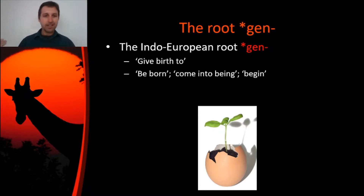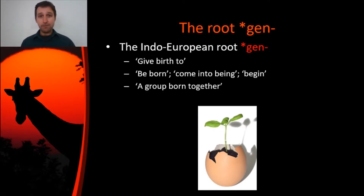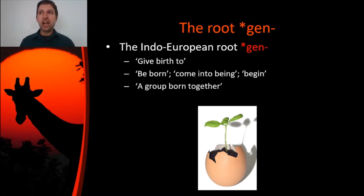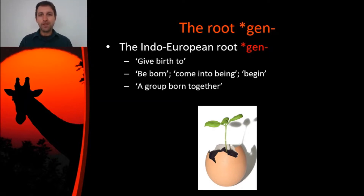On the other hand, sort of the opposite of that is being born. Somebody gives birth, and then somebody else is born, or comes into being, or begins life. So this root gives birth — no pun intended — to words that mean all of these different things. It also gives birth to nouns that mean a group that is born together, sharing some traits. So this root can mean birth, creating new life, a group, a clan, or any kind of group of people that share characteristics.